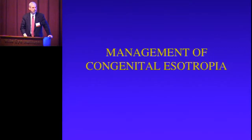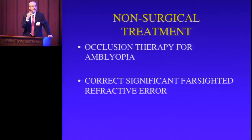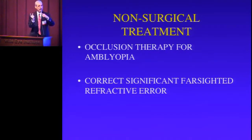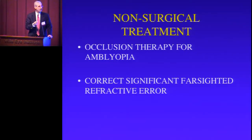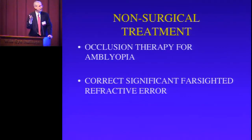How do you manage congenital esotropia? If they have amblyopia and are not really alternating, you can patch them for a very short period of time. If they have a very significant hyperopic correction, you can give glasses and see if the eyes straighten out — and if they do, they wear the glasses. But that's not very common in this particular condition.